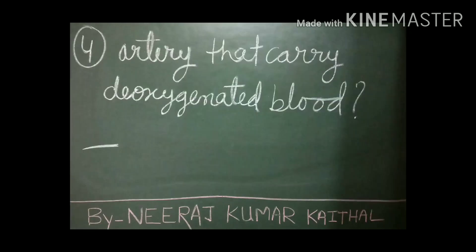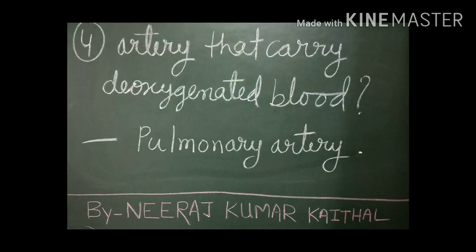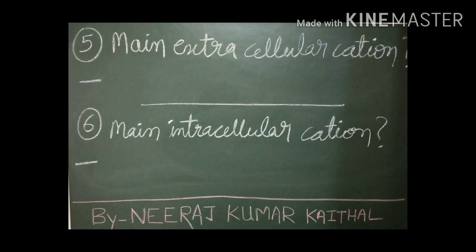Question number four: give the name of the artery which carries deoxygenated blood. Answer: in our body, the pulmonary artery is the only artery that carries deoxygenated blood. An artery is made up of three layers: the inner layer is known as tunica interna, the middle layer is tunica media, and the external layer is tunica externa or tunica adventitia.